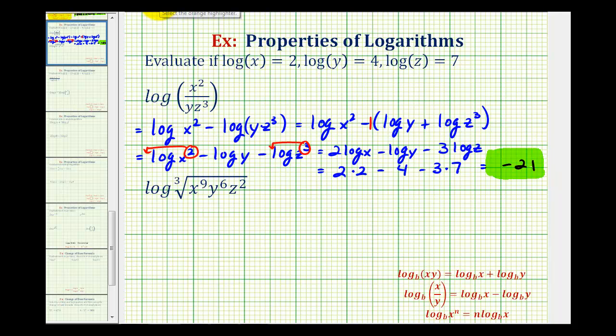For our second example, we first want to write the number part of the log in exponent form. We're going to have the exponent divided by the index for each variable. So we'll have the common log of x to the power of nine divided by three, that's x to the third. Y to the power of six divided by three, that's two, so y squared. And then z to the power of two divided by three, which is two-thirds.